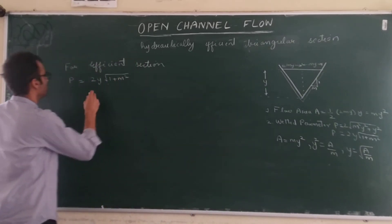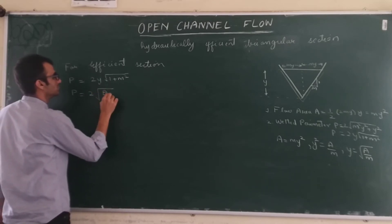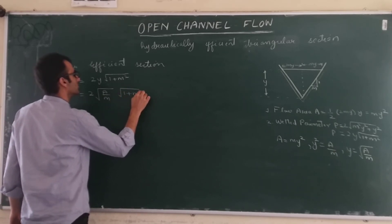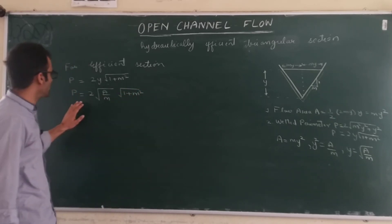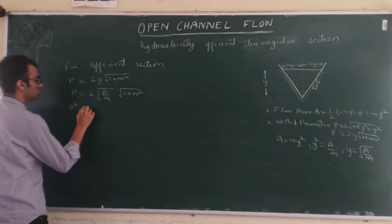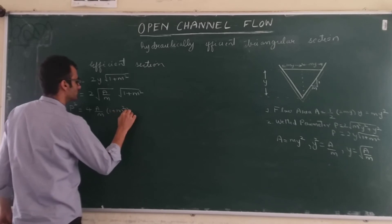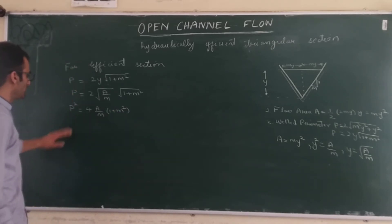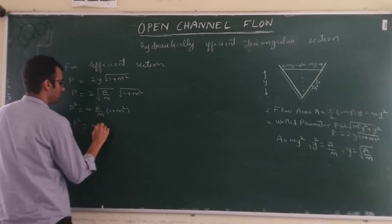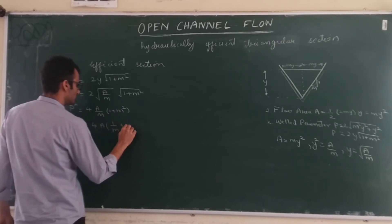Squaring both sides, we get P² = 4 · (A/M) · (1 + M²). Simplifying by putting M inside: P² = 4A · (1/M + M).